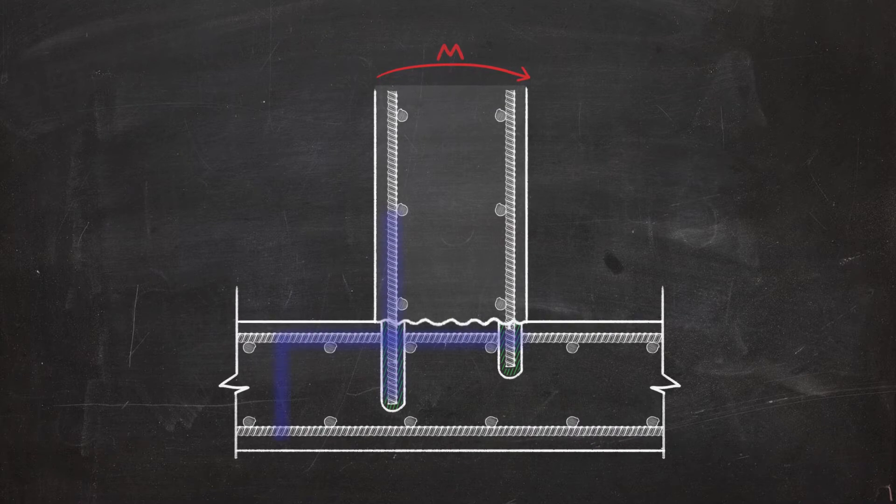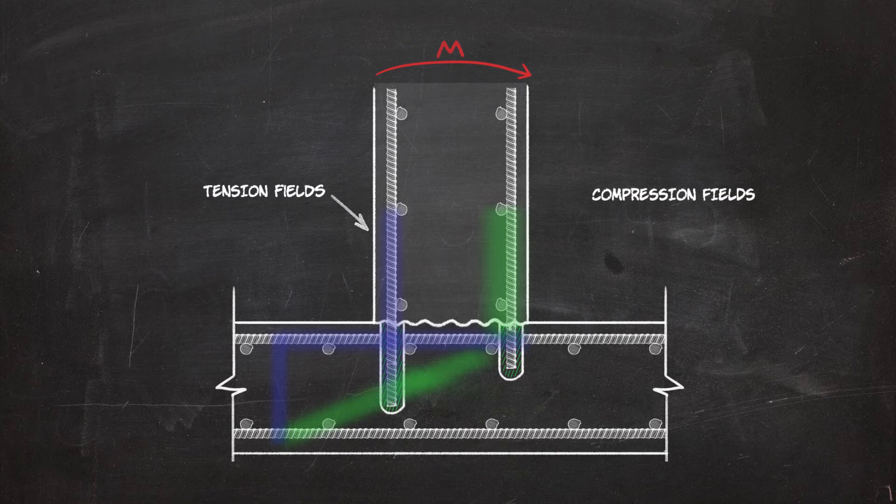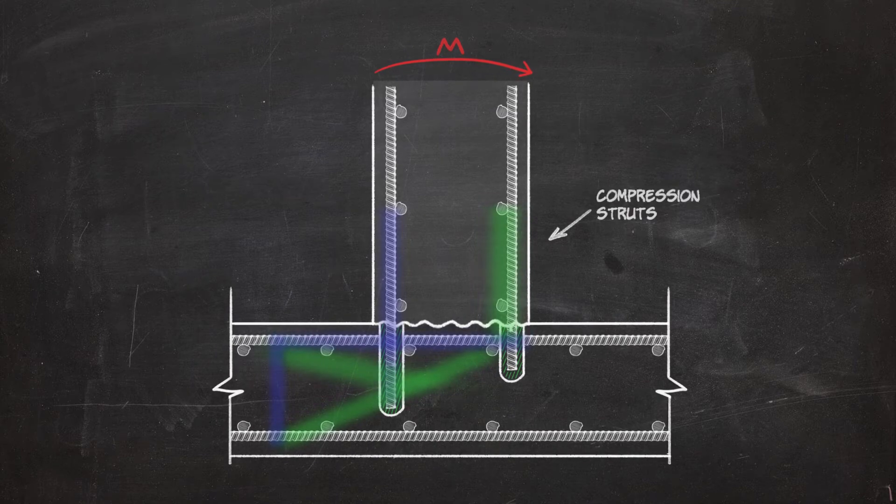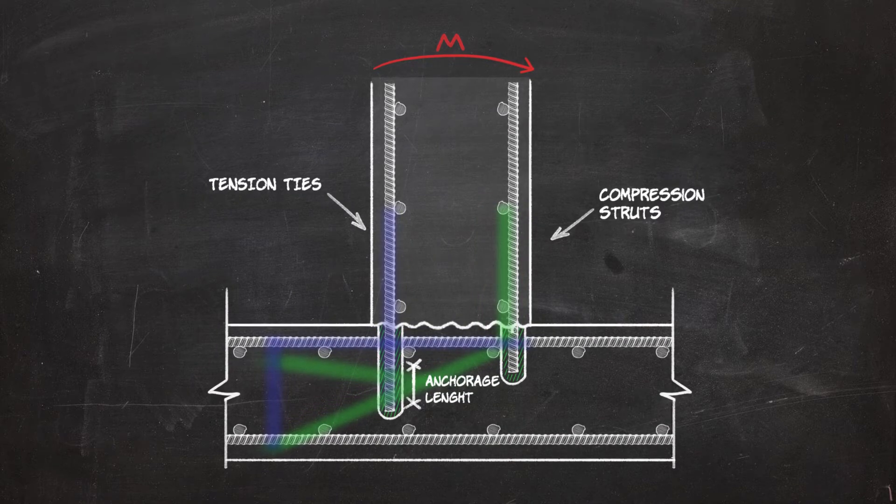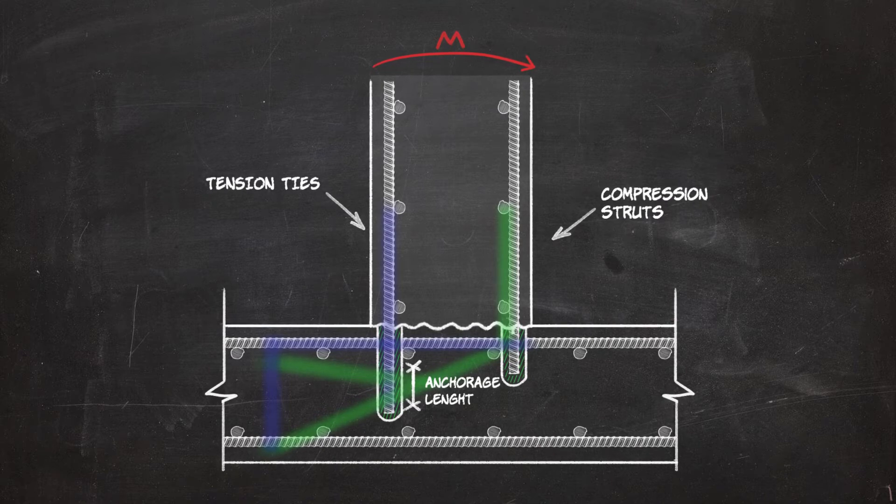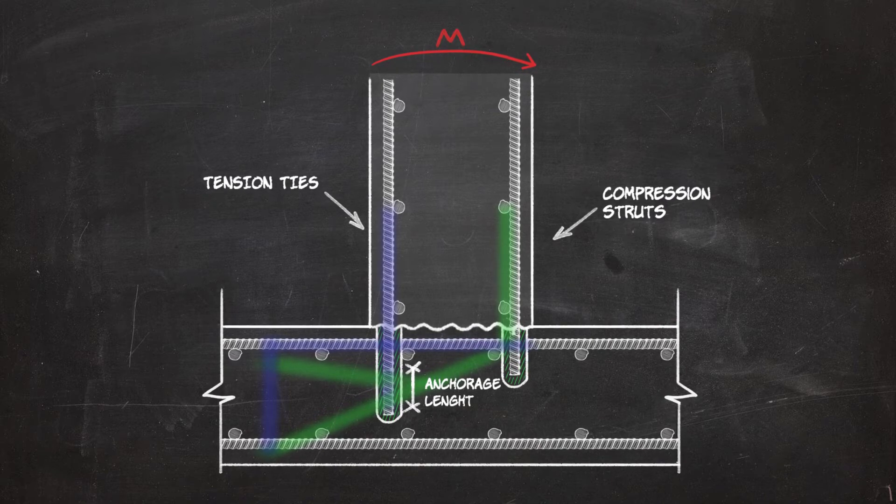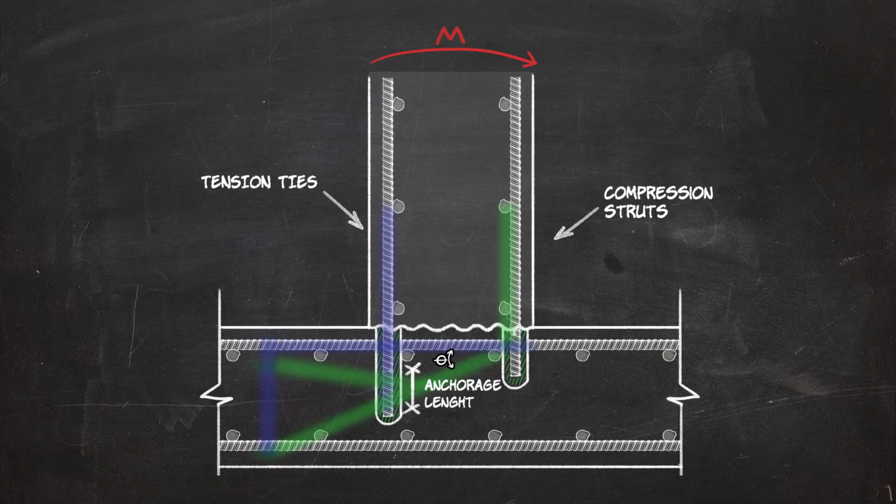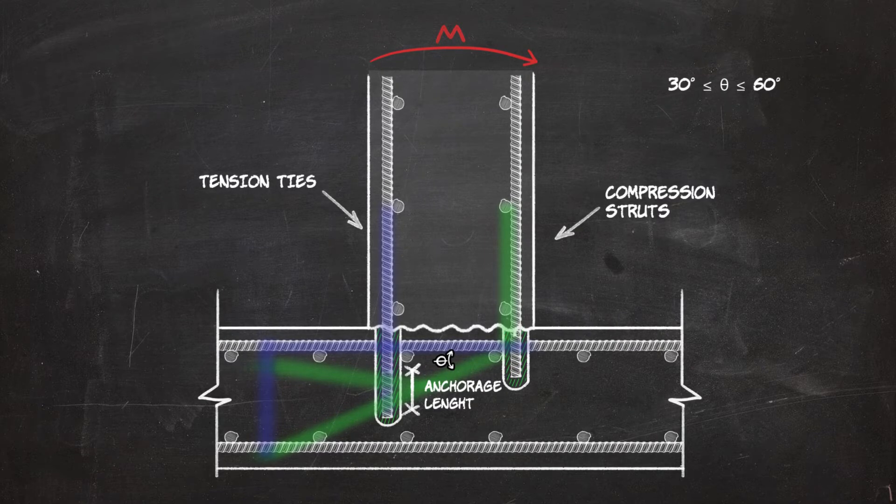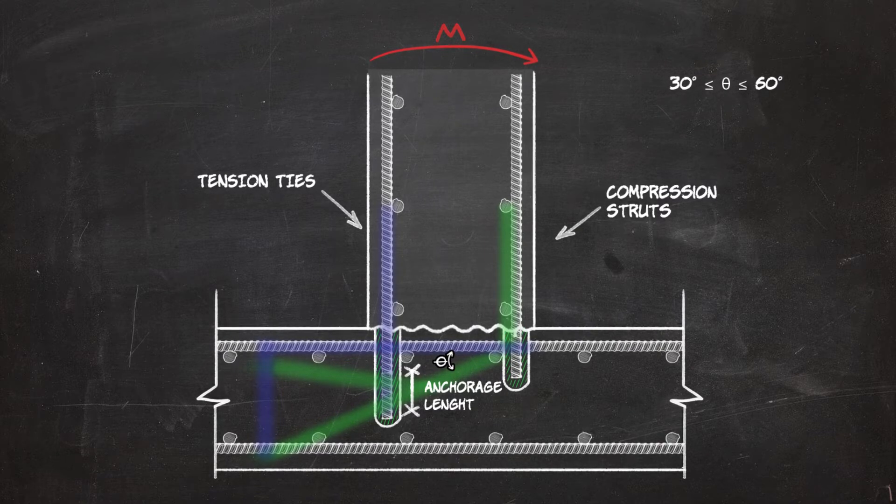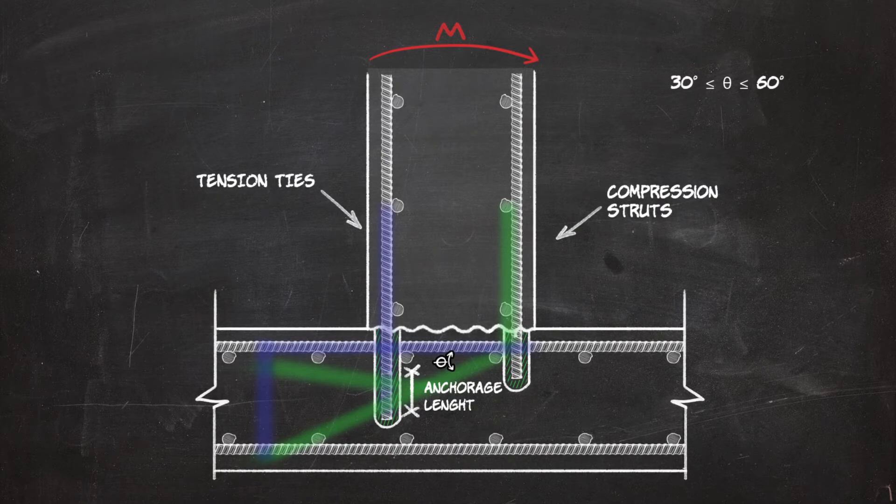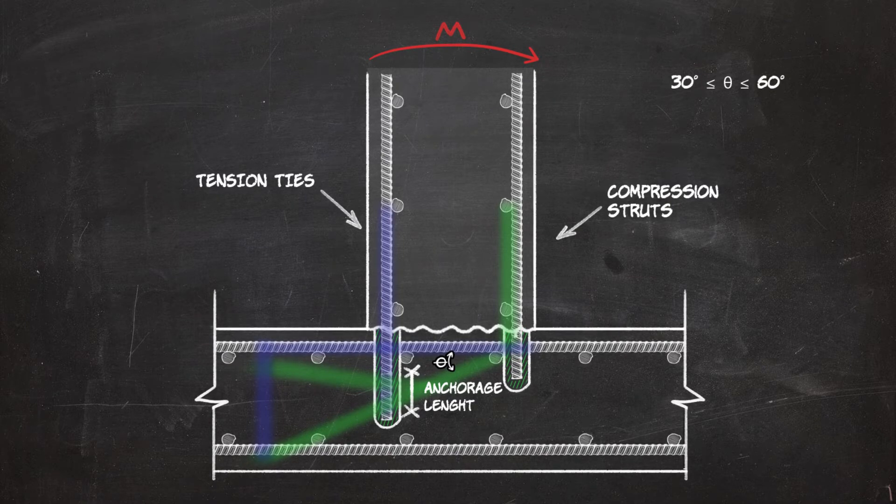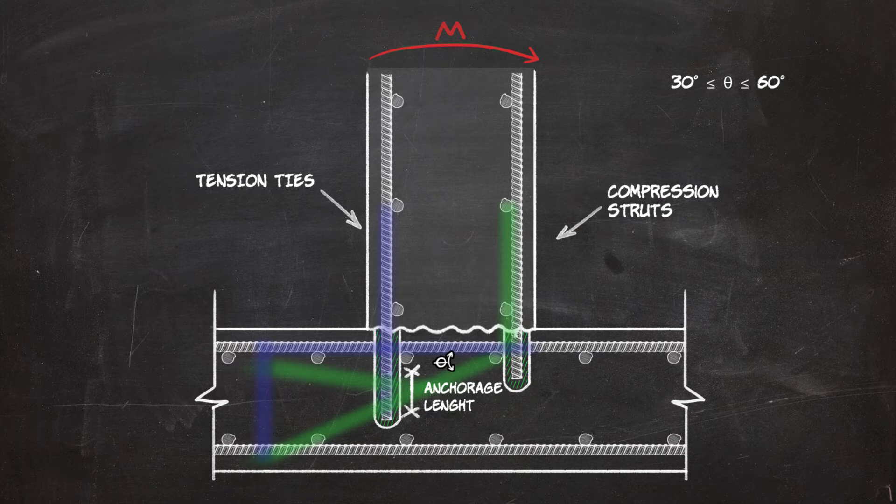The bending moment creates tension fields and compression fields. We'll represent them as compression struts and tension ties. Tests on system connections installed with Hilti mortars have determined the range of the angle theta between 30 degrees and 60 degrees. With Hilti HIT rebar design method, you can design rigid connections with straight post-installed rebar.